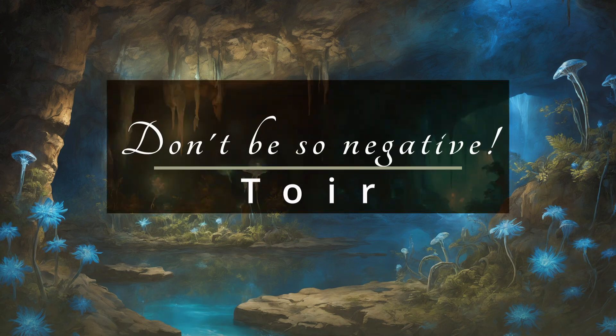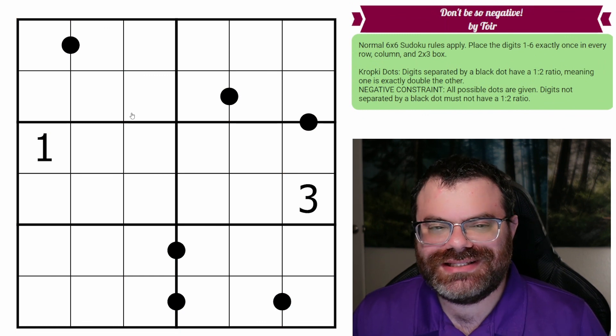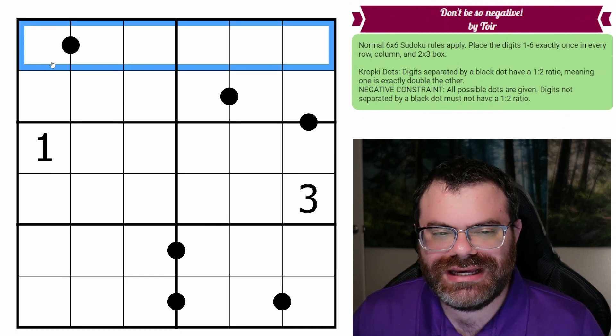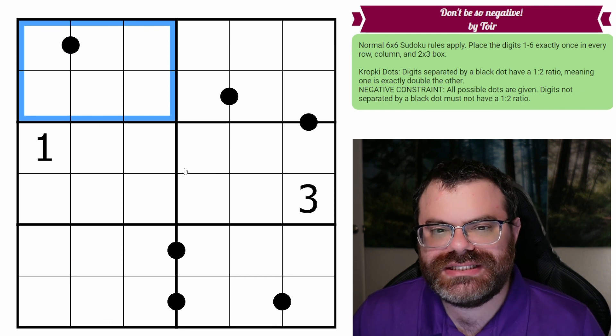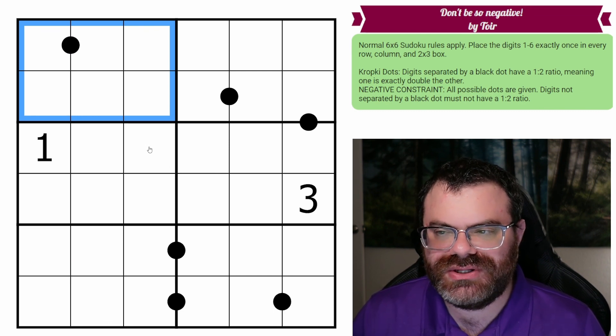Hello, let's continue our Sudoku adventure with Don't Be So Negative by Toyer. We have normal six by six Sudoku rules in every row, every column, and every two by three box. We are placing the digits one to six exactly once each.